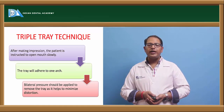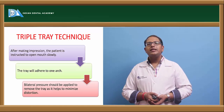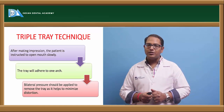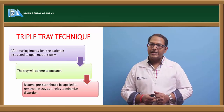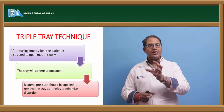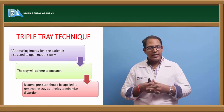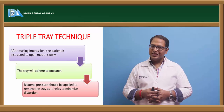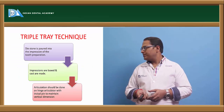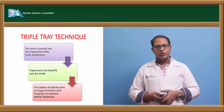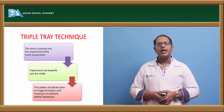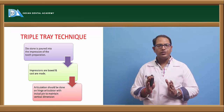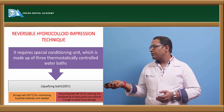One important point before proceeding — in all these techniques, including putty wash, removal of the tray should be in a single stroke. The reason is the viscoelastic property of the material; if not removed in a single stroke the material will get distorted. This viscoelastic property, both viscous and elastic, is present in light body and any polyvinyl siloxane material. Die stone is poured into the impression onto the tooth preparation, impressions are boxed, casts are made, and articulation is done on a hinge articulator or mean value articulator, both of which are suitable for triple tray techniques.